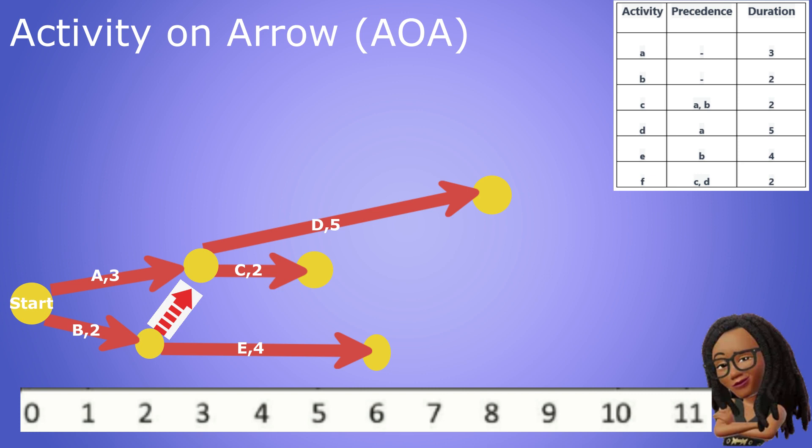Activity F has both C and D as predecessors. While activity C ends on day five, activity D does not end until day eight which means F has to wait until then to start. We draw the activity F arrow from the terminating node of activity D for a length of two days which means it terminates at day 10. And like we did for B and C, we represent C and F's relationship with a dashed arrow.